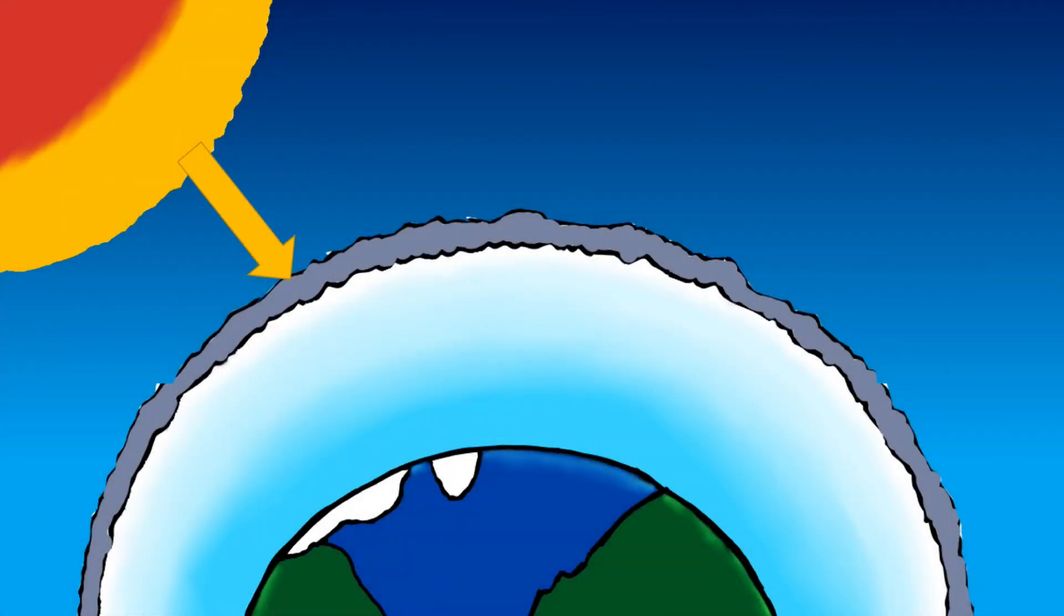When solar radiation reaches the Earth's atmosphere, a part of it is reflected back into space. The rest of the radiation is absorbed by the land and oceans, thus heating the Earth.